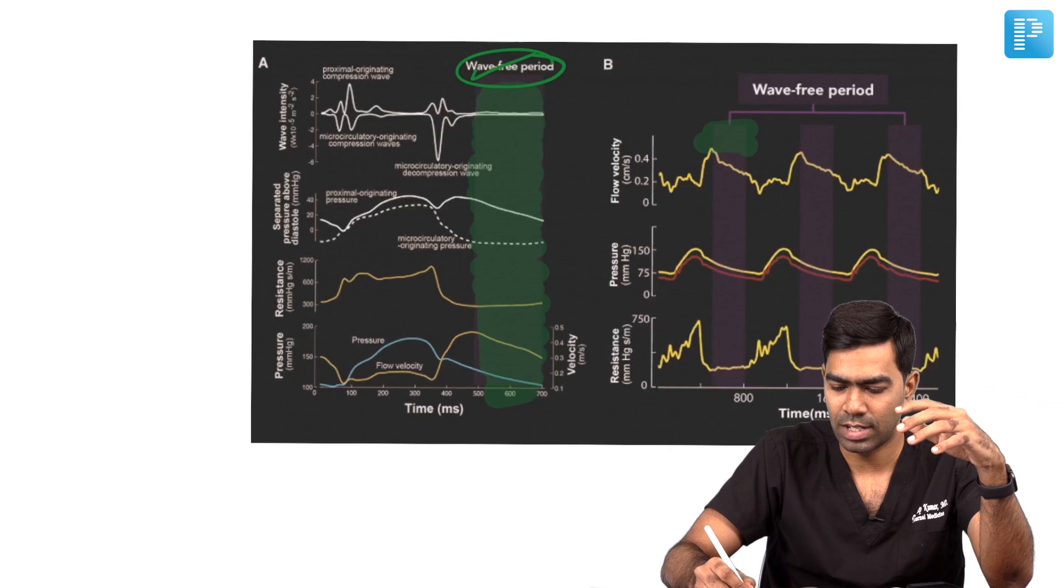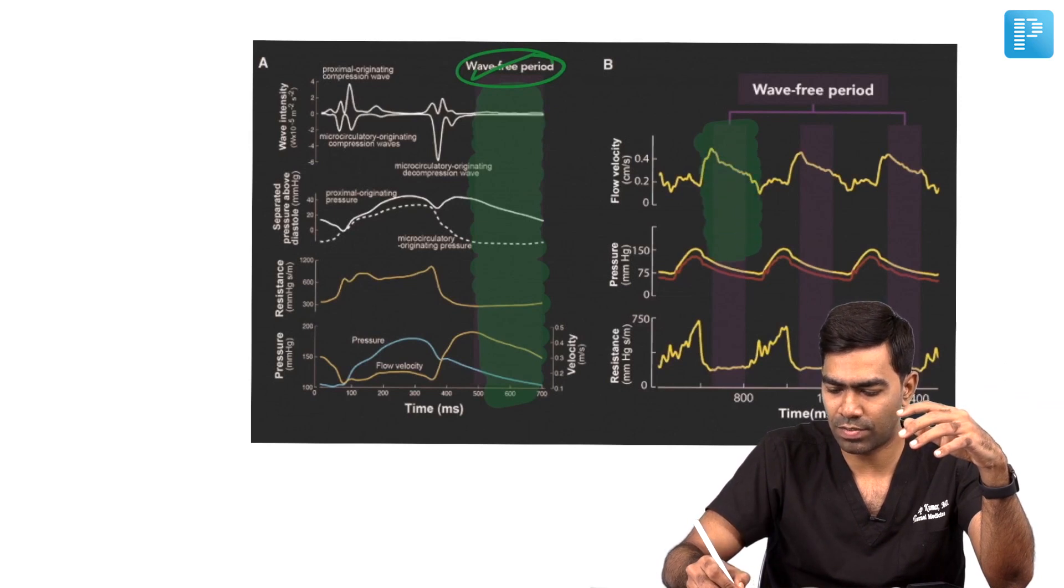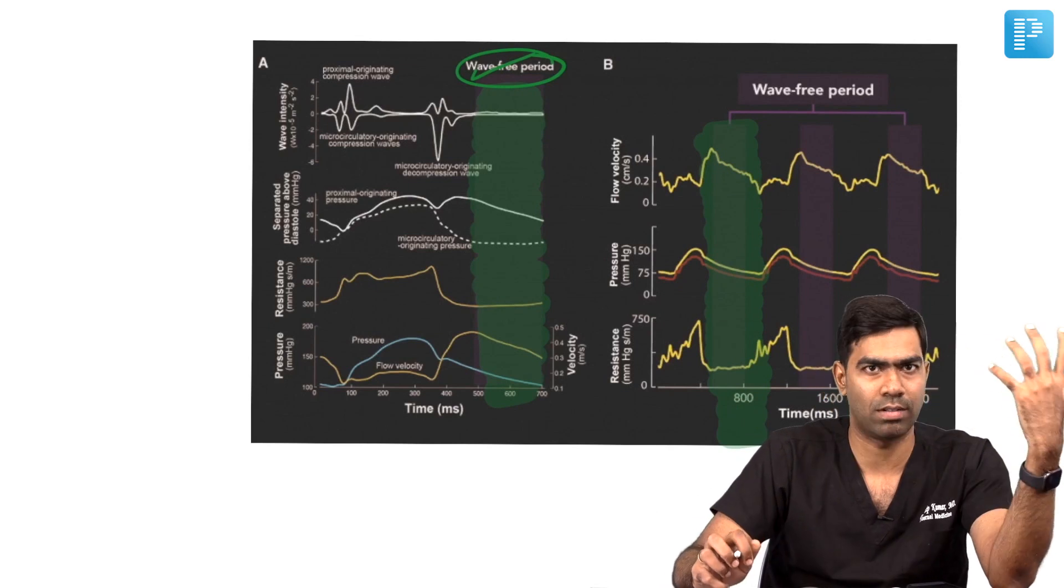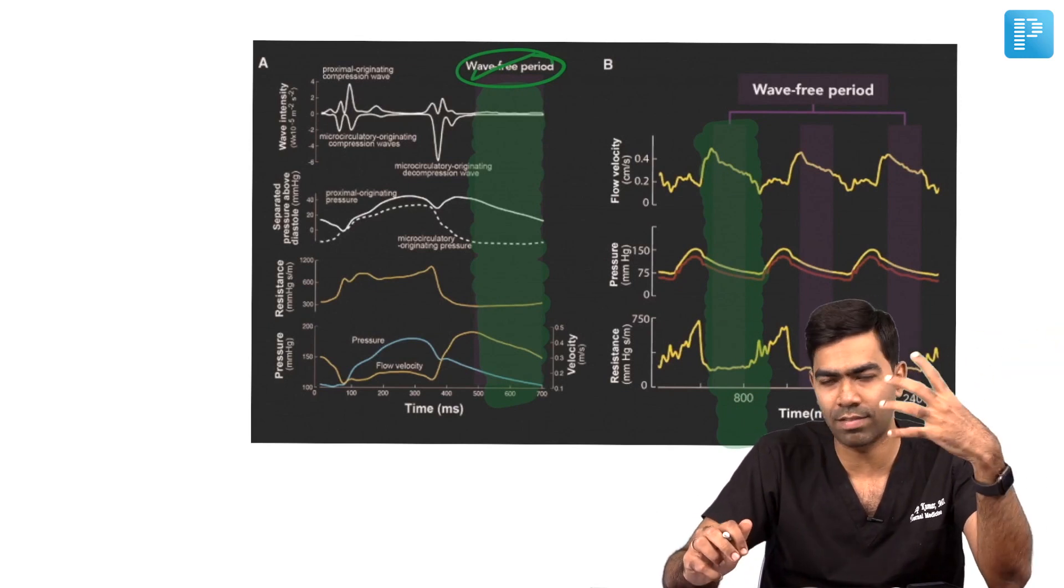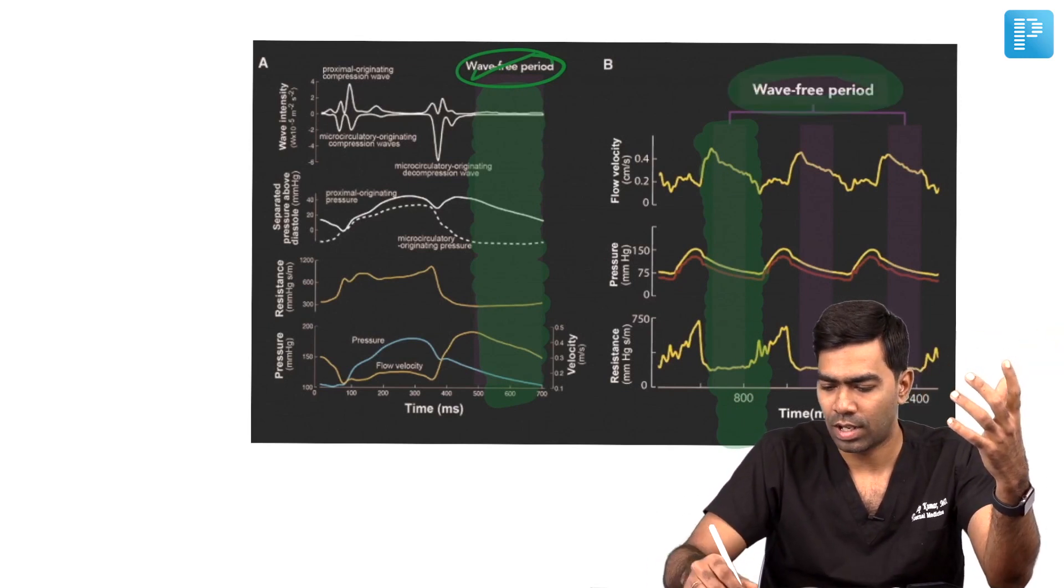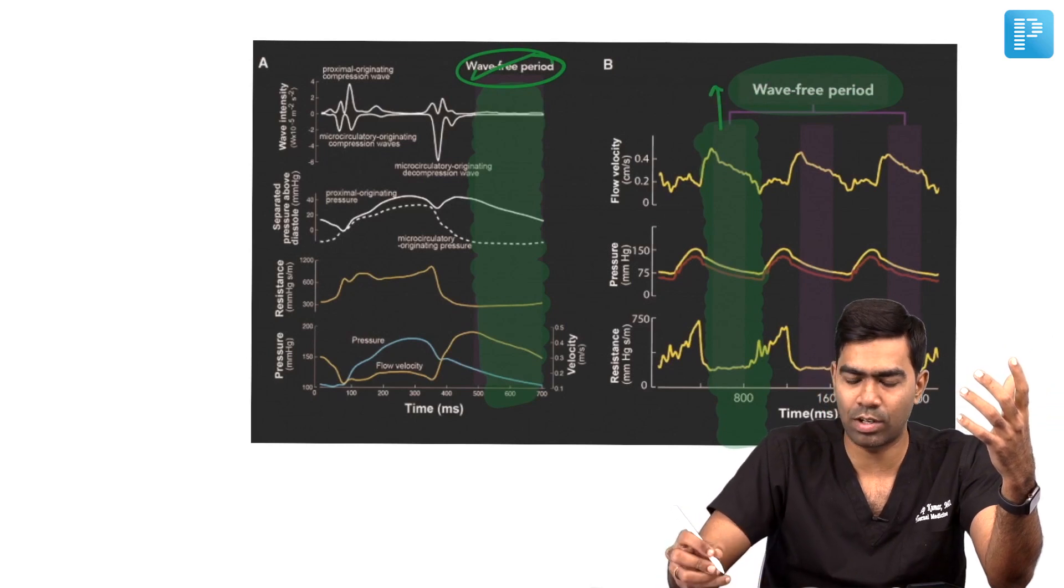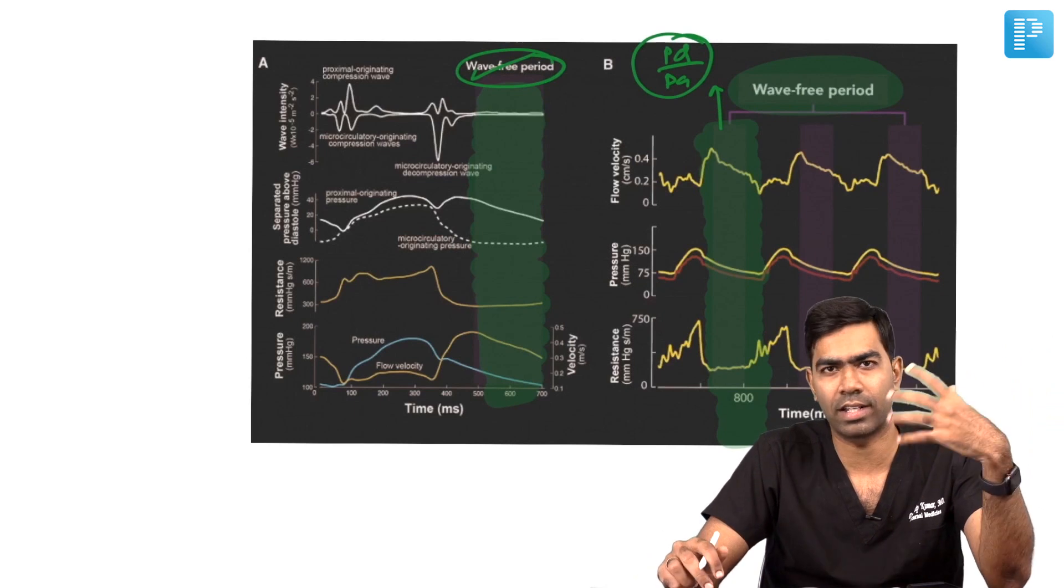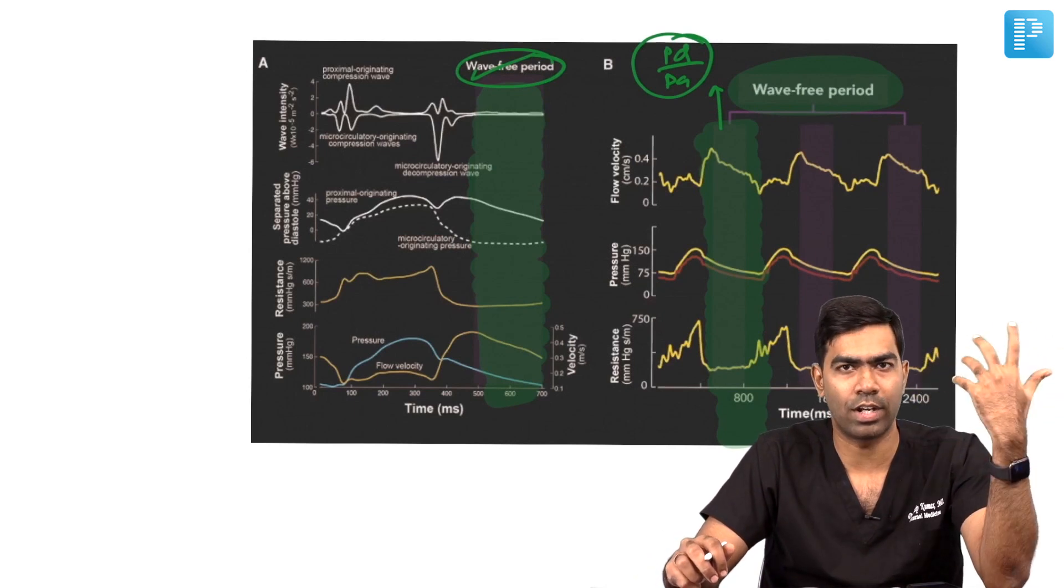This is experimental data that you can extrapolate into the simple pulse waveform. In the pulse waveform, this portion corresponds to what we've experimentally discovered as the wave free period. During this particular period, if you find out the PD/PA, that becomes really significant, like the FFR we already know.